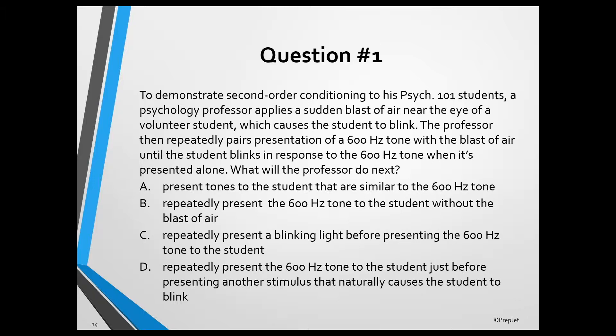To identify the correct answer, you'd have to notice that the professor is demonstrating second-order conditioning, know that second-order conditioning is another name for higher-order conditioning when it involves two steps, and know what occurs during the second step. The first step in higher-order conditioning is classical conditioning, as described in the question. The blast of air is the unconditioned stimulus that naturally elicits an unconditioned eye blink response, and the 600 Hertz tone became a conditioned stimulus after the tone was repeatedly presented with the blast of air.